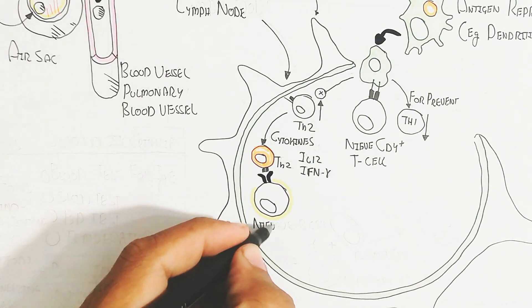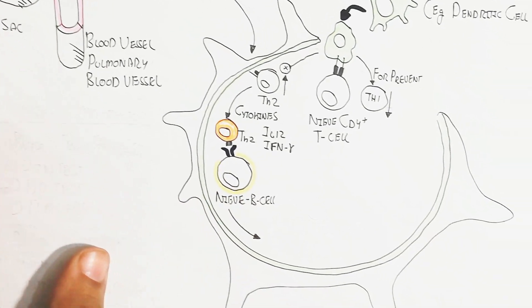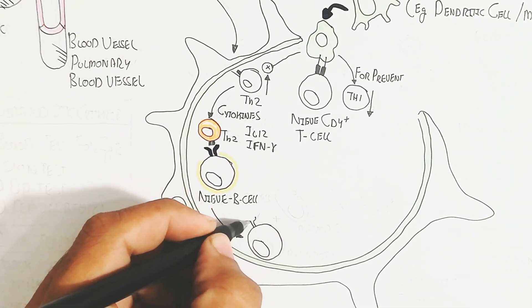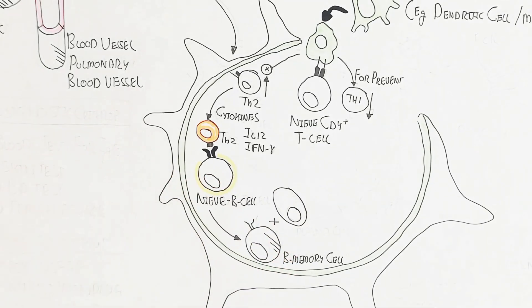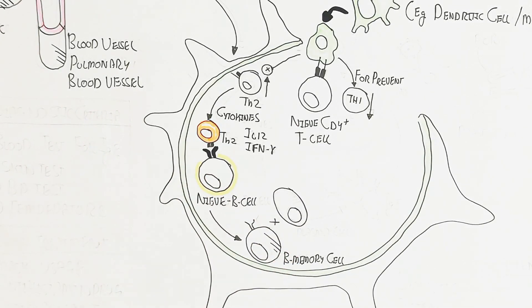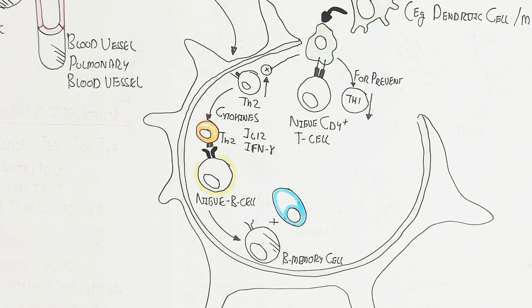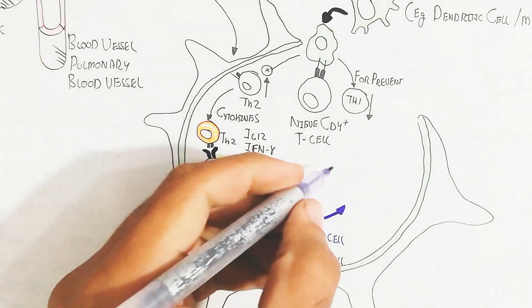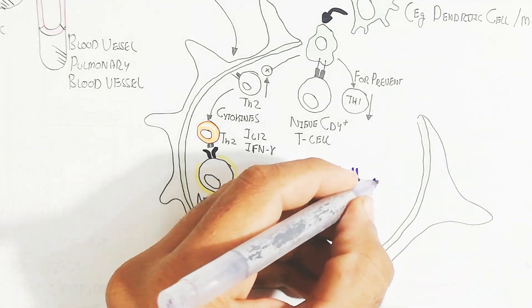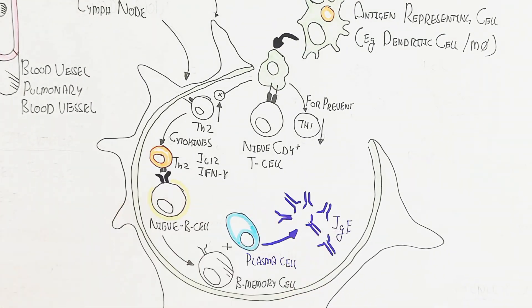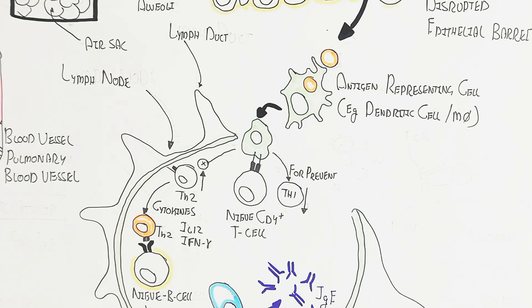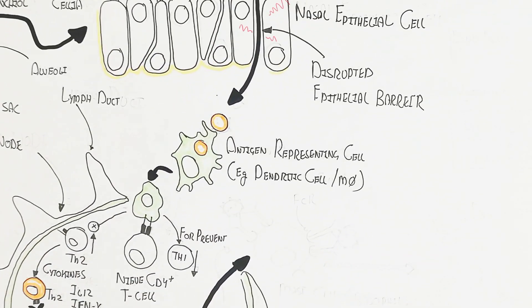The T helper 2 cells present antigen to naive B cells, which then proliferate. Interleukin-12 and interferon-gamma recruit naive B cells, which then proliferate into plasma cells and memory B cells. The plasma cells produce immunoglobulin E (IgE) antibody, which targets mast cells.